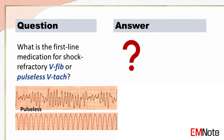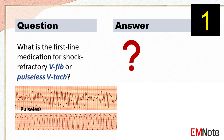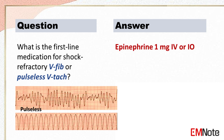What is the first-line medication for shock refractory V-fib or pulseless VTach? The first-line medication for shock refractory V-fib or pulseless VTach is epinephrine 1 mg intravenous or interosseous.